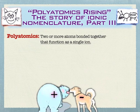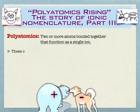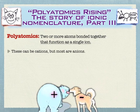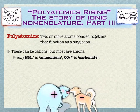What is a polyatomic? A polyatomic is simply two or more atoms that are, even though they are covalently bonded, they function as a single ion. These are typically anions, although they can be cations too. The typical cation, of course, being ammonium. You'll see a lot of that.